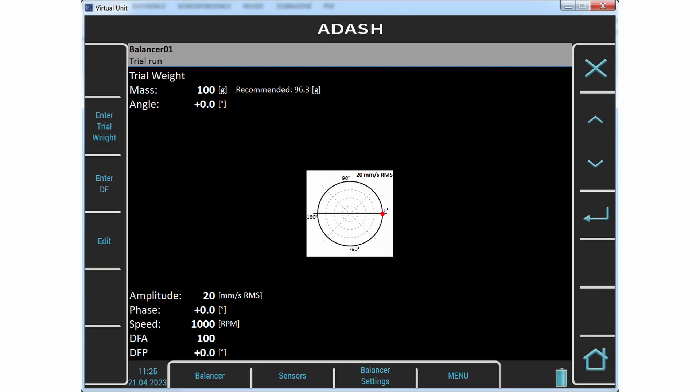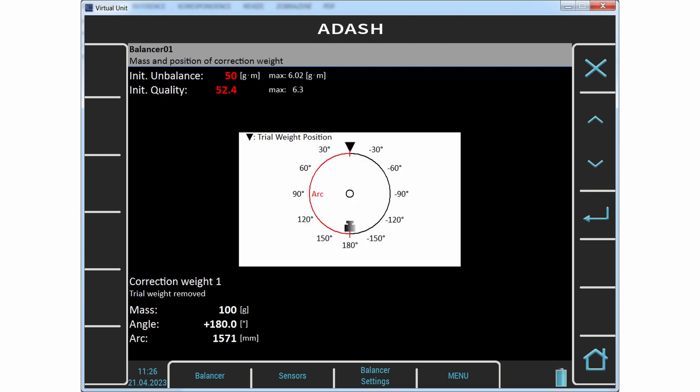The trial run values are 20 millimeters per second and phase 0 degrees. Now you can see that initial unbalance is 50 gram meters. Permissible value is 6. Initial quality is 52.4. Required grade value is 6.3. Values are red colored. It is clear. We must balance.